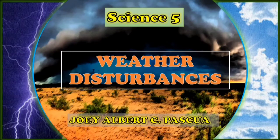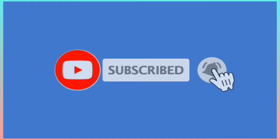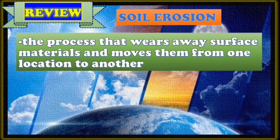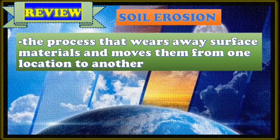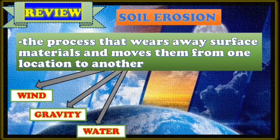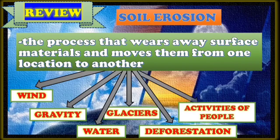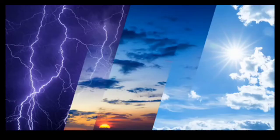For today's topic, we are going to discuss about weather disturbances. Last meeting, we discussed about soil erosion, its causes, and its effects on the living things and the environment. As a quick review, soil erosion is the process that wears away surface materials and moves them from one location to another. We have the causes of soil erosion: wind, gravity, water, glaciers, deforestation, activities of people, overgrazing of animals, and many more.